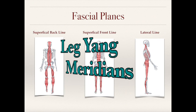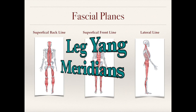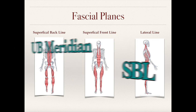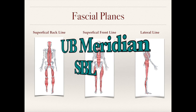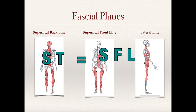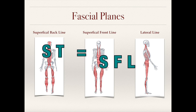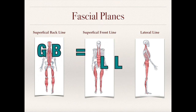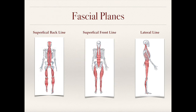These are equivalent to the leg yang meridians. The urinary bladder meridian is the superficial back line, the stomach meridian is the superficial front line, and the gallbladder is the lateral line. So these fascial planes show us what muscles are part of these lines.